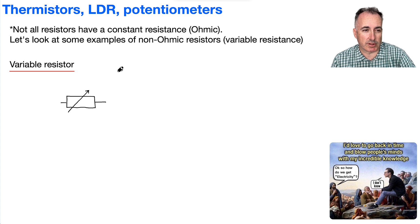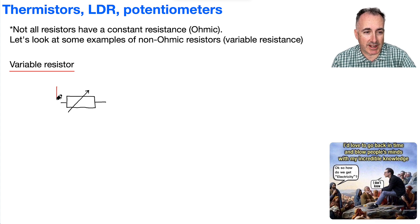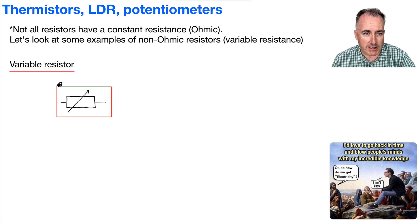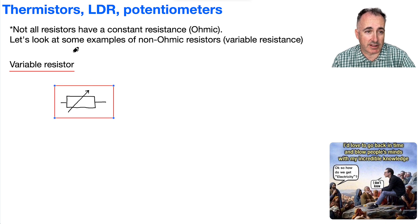So let's look at those ones. In general, the symbol that we use for a variable resistor is this — it looks like a resistor with a little line through it.